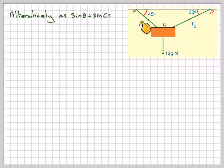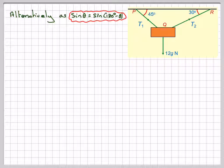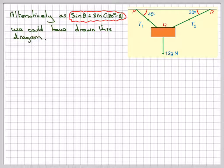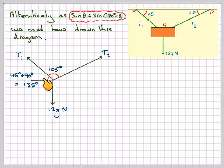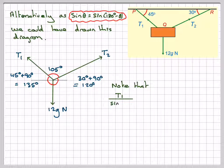Alternatively, we could have just drawn the diagram like it is in the given question and use the idea that sin theta equals sin(180 minus theta). So we could have drawn it like this. That's T1 in the right direction, that's T2 in the right direction, and that's 12G going downwards. This angle will be 105, which we can calculate from using this triangle here. This angle here, if we draw a straight line in here, if this is 45, this one would have to be 45 and this is 90, so it's 45 plus 90 which is 135. Same idea here. If we draw this one here, this one would have to be 30, this is 90.